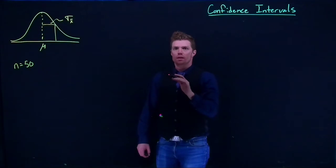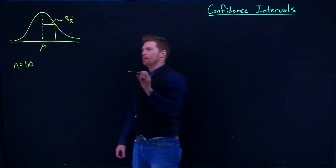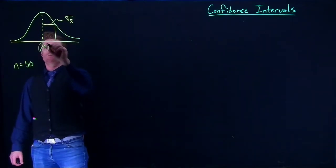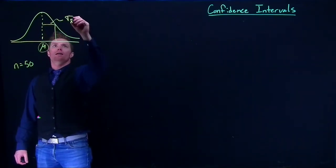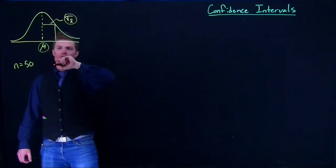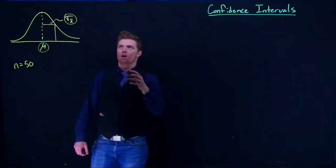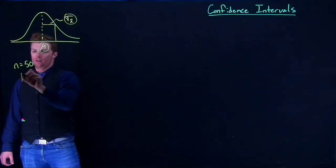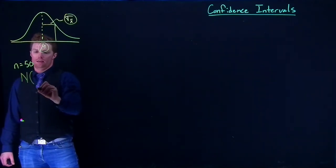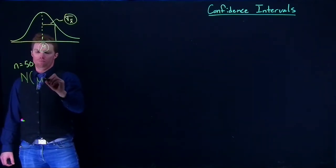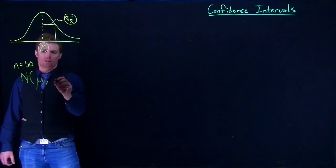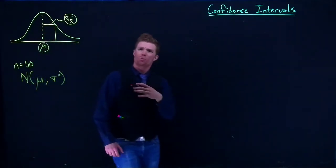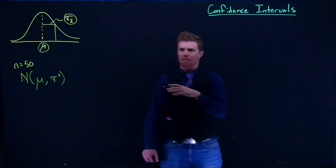All of this is really based upon us knowing what mu and our standard deviation actually are. We write this a lot of times in shorthand as N, where this is our true mean and this is our true variance.